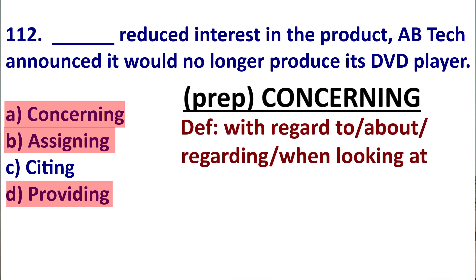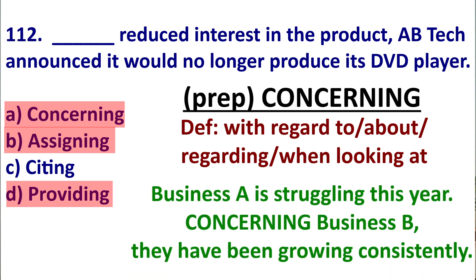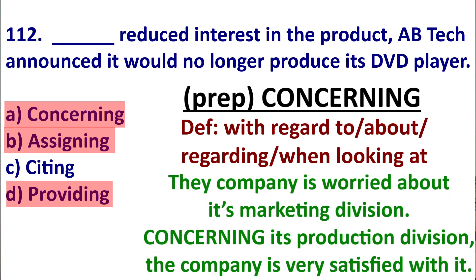Often 'concerning' is a preposition that means 'about,' 'in regard to,' 'regarding,' or 'with relation to.' Here's an example: 'Business A is struggling this year. Concerning business B, they have been growing consistently' — meaning with regard to business B. Or: 'The company is worried about its marketing division. Concerning its production division, the company is very satisfied' — meaning when it comes to the production division.